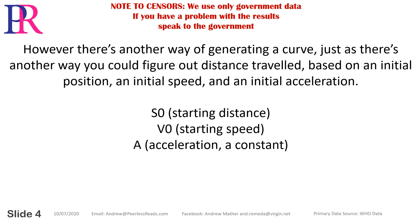However, there's another way of generating a curve, just as there's another way you could figure out distance travelled, based on an initial position, an initial speed, and an initial acceleration: S0 is the starting distance, V0 is the starting speed, and A is the acceleration — a constant.